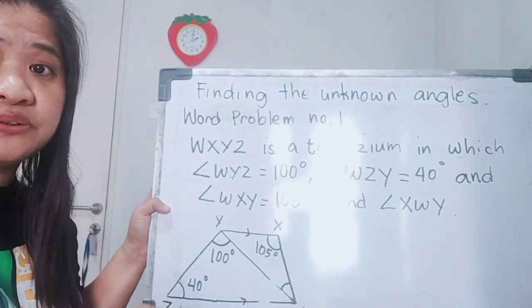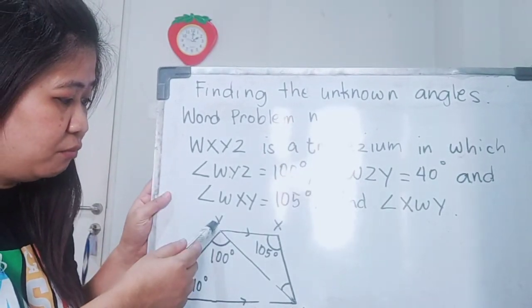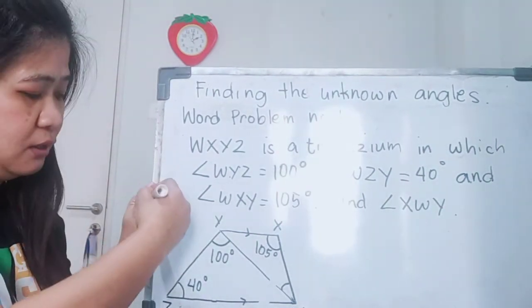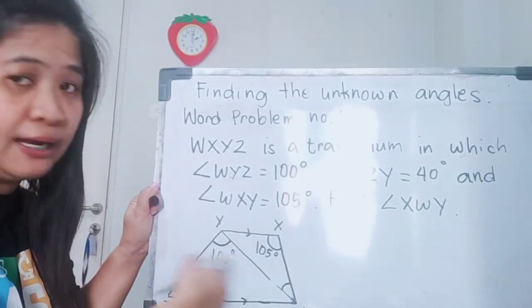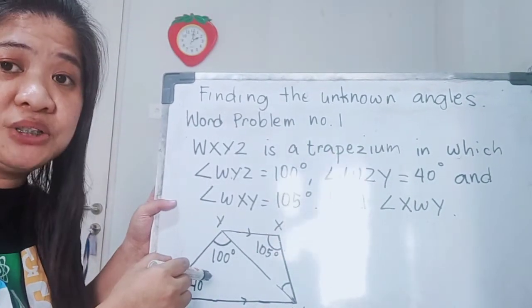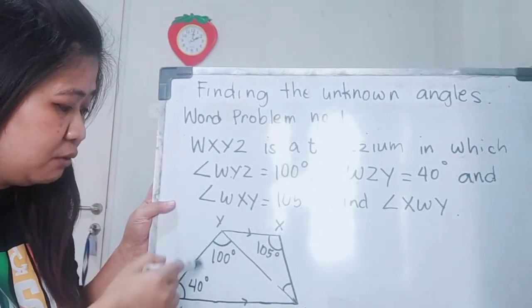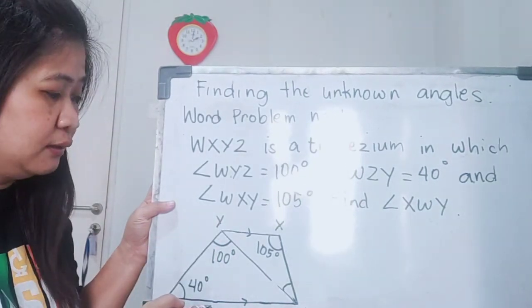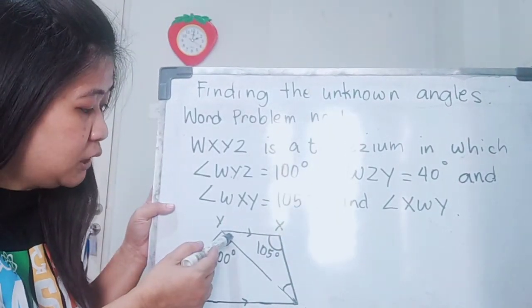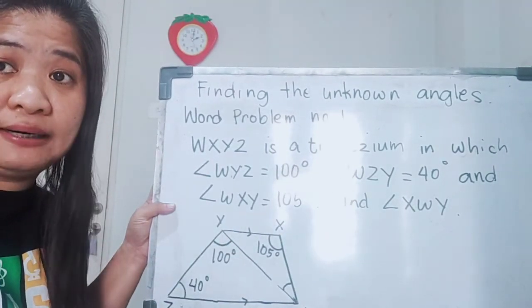Why is this a trapezium? Because there is one pair of parallel lines. The first line is YX, parallel to ZW. So there is one pair of parallel lines, but the other two lines are not parallel. Another concept about trapezium: the angles between two parallel lines add up to 180 degrees. Remember that.